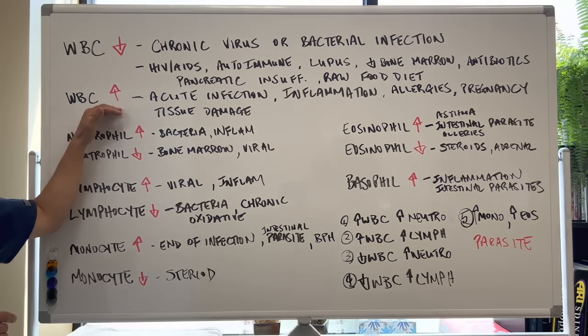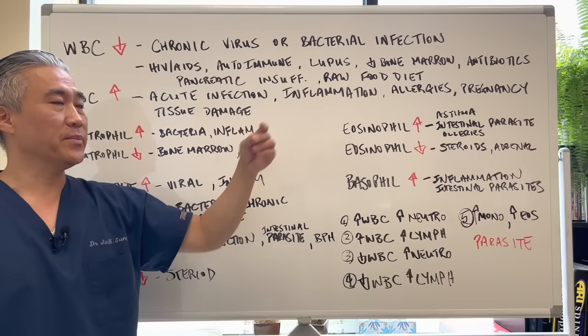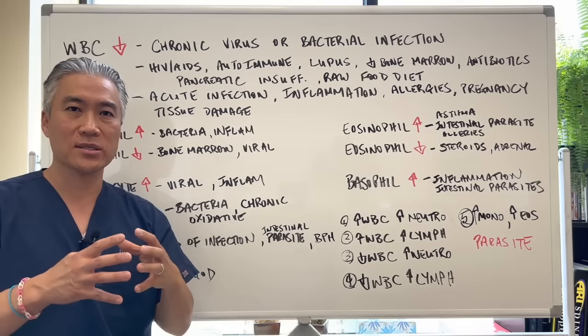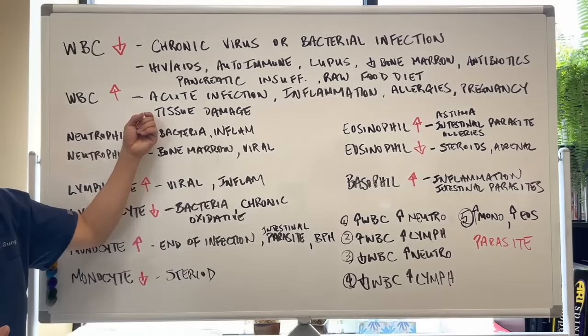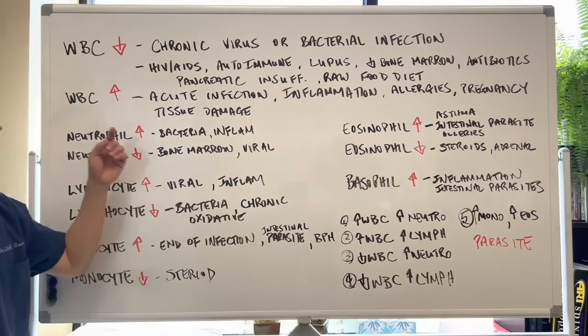When white blood cells increase above lab and functional levels, it means acute infection, inflammation, allergies, or even late-stage pregnancy or giving birth — the count can go up and will calm down after delivery. Tissue damage, muscle tissue, or surgery can also cause an increase in white blood cell count.